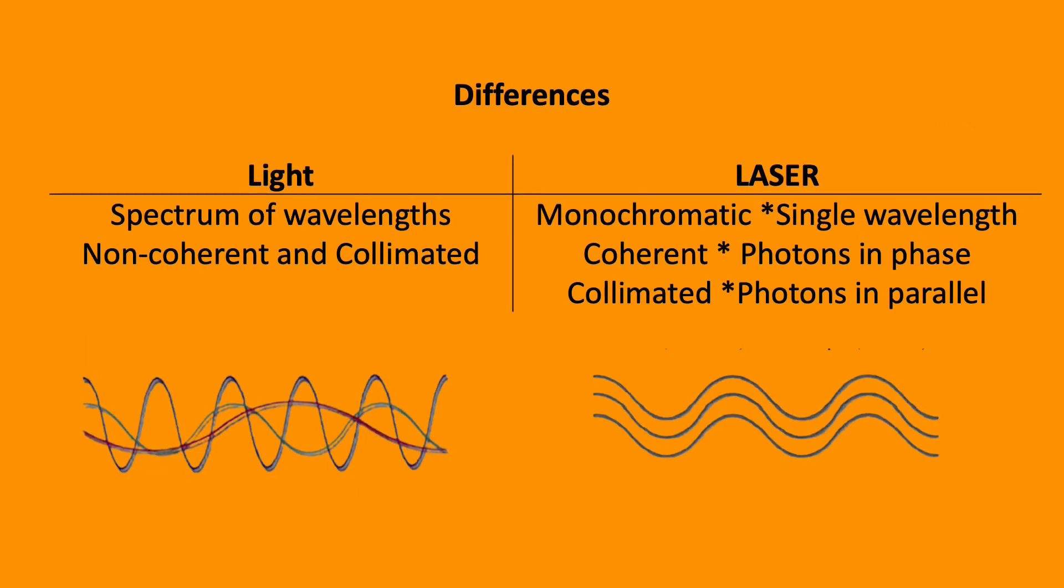Difference between laser and natural light. Laser is monochromatic, it's a single wavelength, it's coherent and collimated so the photons move in phase and parallel. Natural light is a spectrum of wavelengths and it's non-coherent and non-collimated.